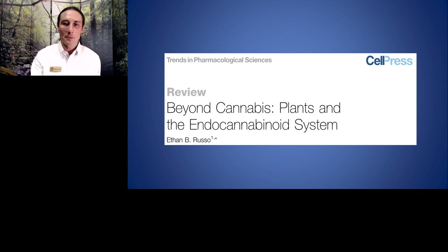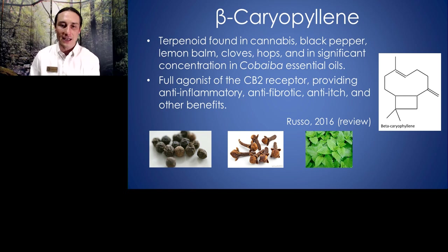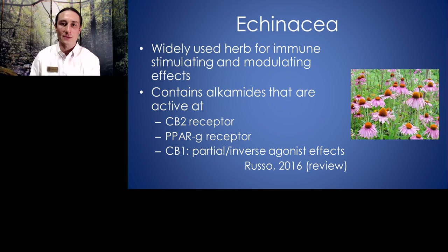Let's talk about other plants that affect the endocannabinoid system. Beta-caryophyllene is a terpene found not only in cannabis but also in black pepper, lemon balm, cloves, hops, and quite abundantly in the essential oil of copaiba, a tree from South America. Beta-caryophyllene has been shown to be a full agonist at the CB2 receptor, providing anti-inflammatory, anti-fibrotic, anti-itch, and other benefits. Remember, it was CB2 receptor activity that was part of the protective mechanism in stroke and heart attack, so beta-caryophyllene could theoretically be helpful in those settings. Echinacea is an herb with immune-modulating effects that contains alkylamides active at the CB2 receptor, as well as the PPAR-gamma nuclear transcription receptor and partial or inverse agonist effects at the CB1 receptor.